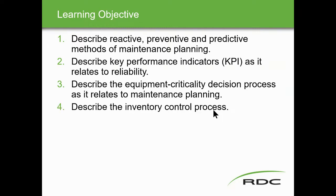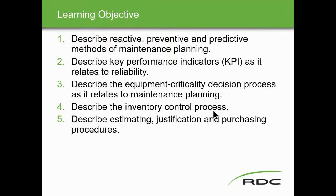Describe an inventory control process — in other words, we're going to talk about what do we have in inventory and why do we need an inventory and can that inventory be held at the vendor or does it have to be on site, because it's a piece of equipment that we'll need if we lose it, we lose all of our plant production. Describe estimating, justification, and purchasing procedures. Every one of these objectives has a course in its own, so we're just going to be touching on all this stuff.